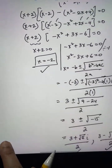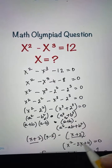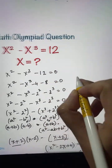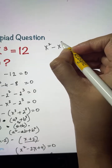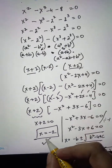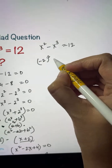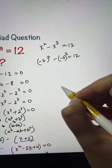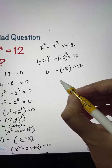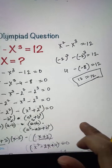So there are three values of x in total. Let's verify by substituting x = negative 2 into the original equation x squared minus x cubed equals 12. We get negative 2 squared minus negative 2 cubed, which is 4 minus negative 8, equals 4 plus 8, equals 12. This confirms x = negative 2 satisfies the equation.